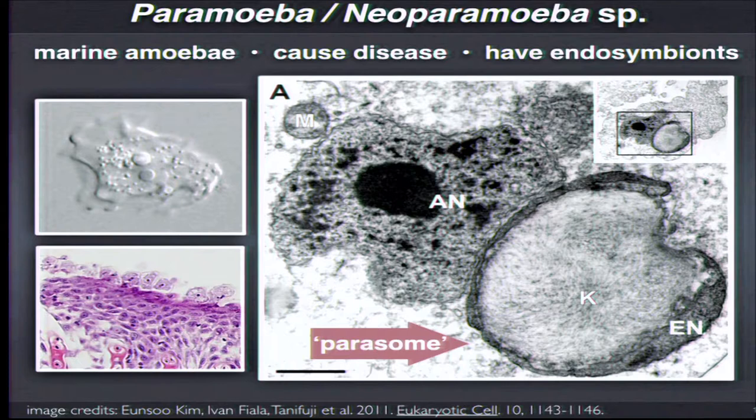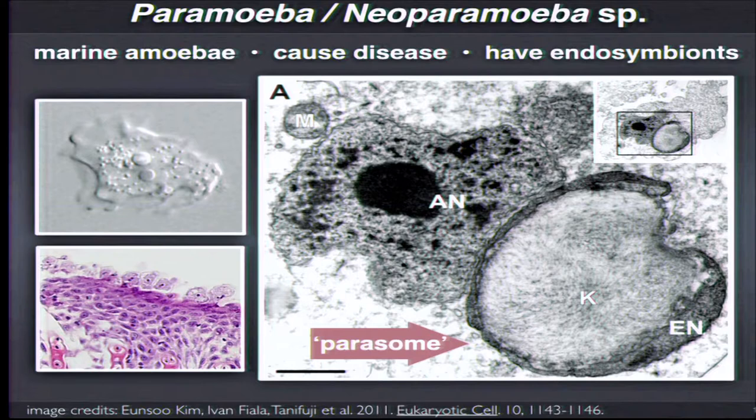This is a group of amoeba belonging to the genus Paramoeba. They are marine organisms found floating and in sediments. They cause diseases such as amoebic gill disease, which causes serious problems in farmed salmon, and they also cause die-offs in sea urchins. What most biologists are not interested in are the unusual eukaryotic endosymbionts that live inside them.